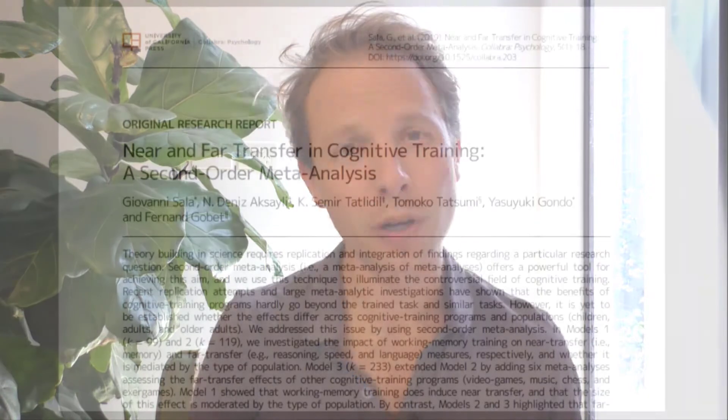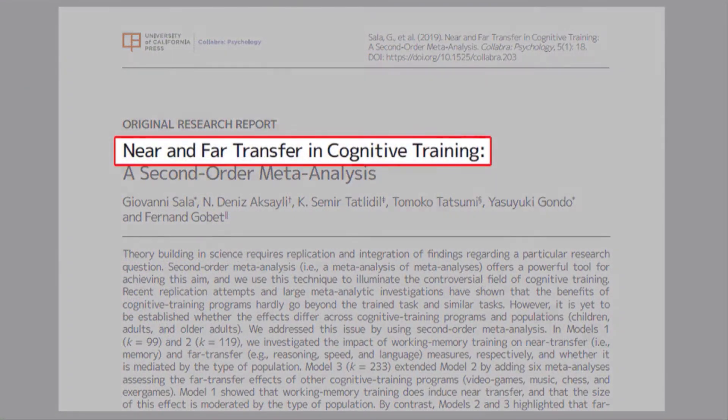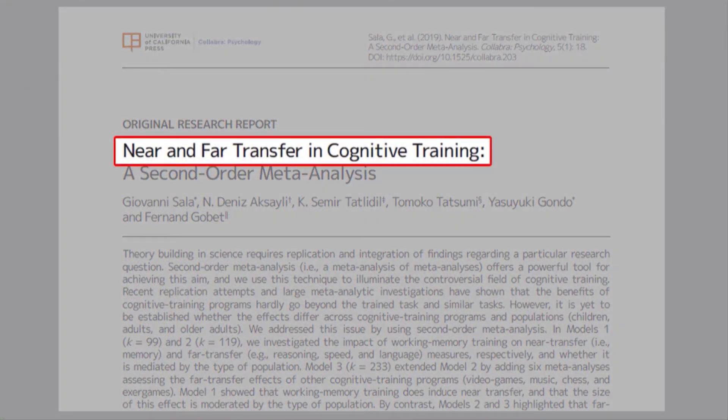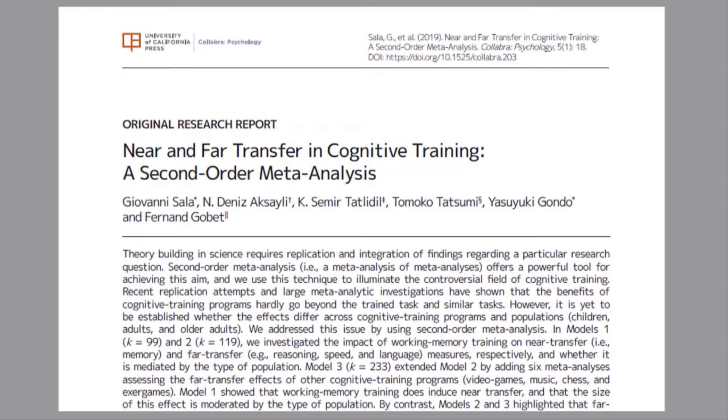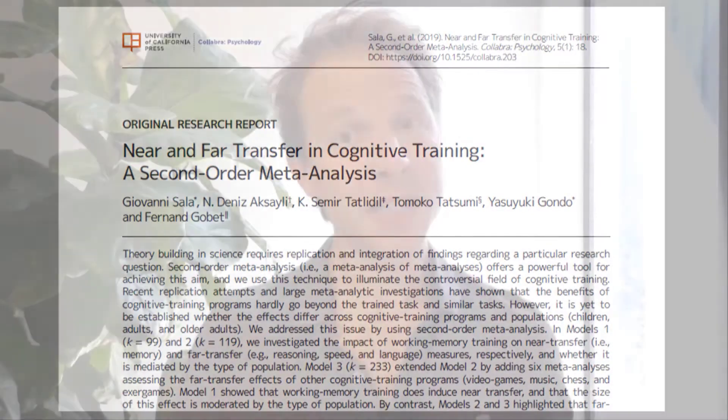The article I've selected this week that aligns with that chapter is called 'Near and Far Transfer in Cognitive Training' by Salah and colleagues. To understand this paper there are two concepts we have to wrap our heads around. The first is essentially the basic learning process.